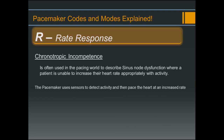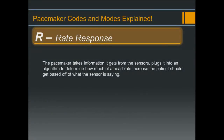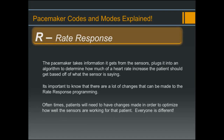The pacemaker uses sensors to detect activity and then pace the heart at an increased rate. There are typically two different sensors in pacing: the accelerometer, which detects motion, and minute ventilation, which detects changes in the patient's breathing. The pacemaker plugs the sensor information into an algorithm to determine how much of a heart rate increase the patient should get. There are many changes that can be made to rate response programming, and patients will often need adjustments to optimize the sensor for their particular needs, since everyone is different.